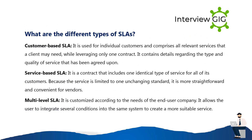What are the different types of SLAs? Customer-based SLA: used for individual customers and comprises all relevant services a client may need under one contract, detailing the type and quality of service agreed upon. Service-based SLA: a contract covering one identical type of service for all customers — more straightforward and convenient for vendors. Multi-level SLA: customized according to the needs of the end-user company, allowing integration of several conditions into the same system for a more suitable service.